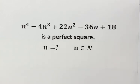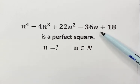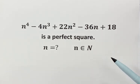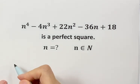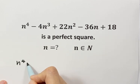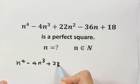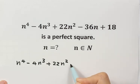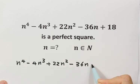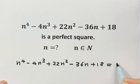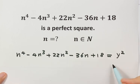In this video, we're going to solve this question. Given the expression is a perfect square, we want to solve for n, where n is a natural number. First, let's set the expression equal to a perfect square. So here we have n to the fourth minus 4n to the third plus 22n squared minus 36n plus 18 equal to y squared, where y is a natural number.